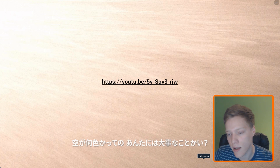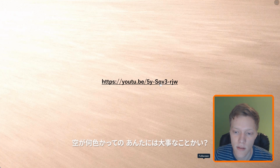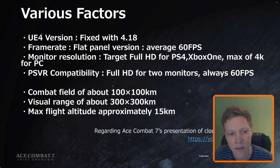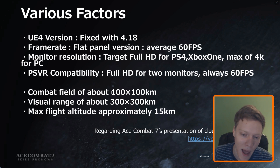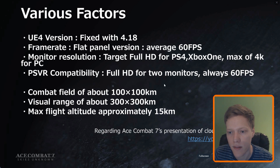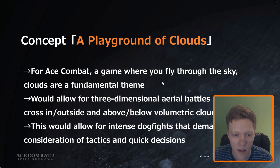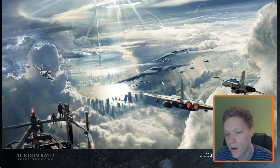The presentation explains what Ace Combat 7 is and gives some numbers. It uses Unreal Engine 4, the map is about 100 kilometers by 100 kilometers, and the game introduces a new visual range and sky height. There's also concept art for the concept of flying through the sky.